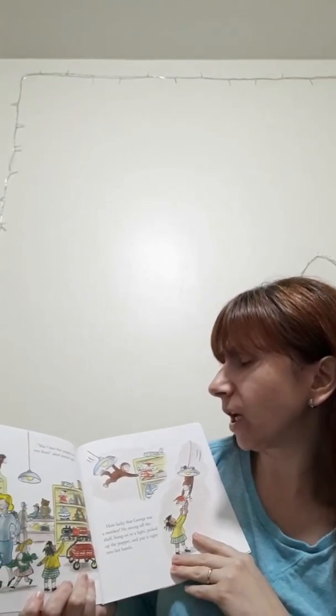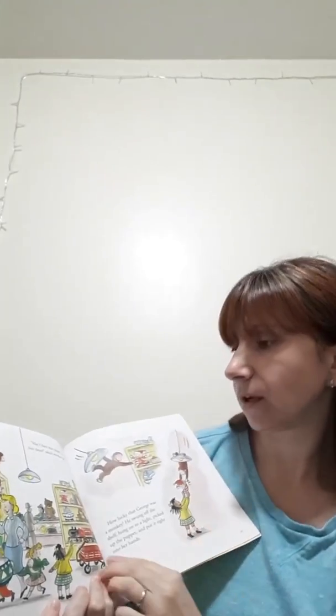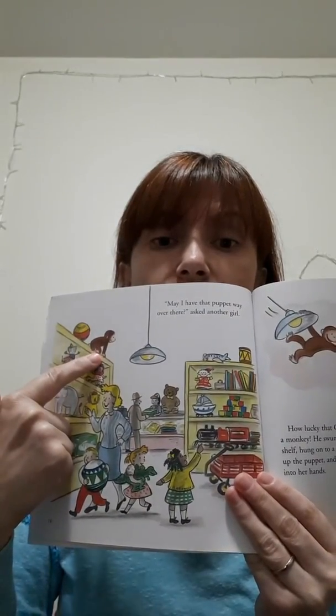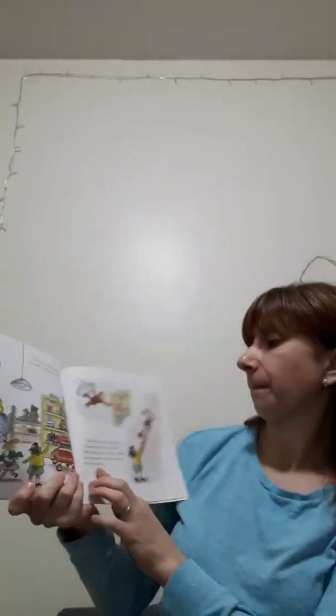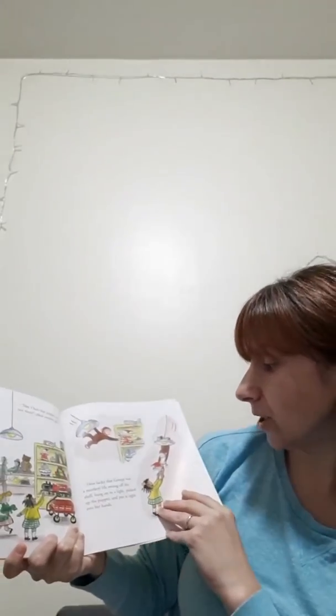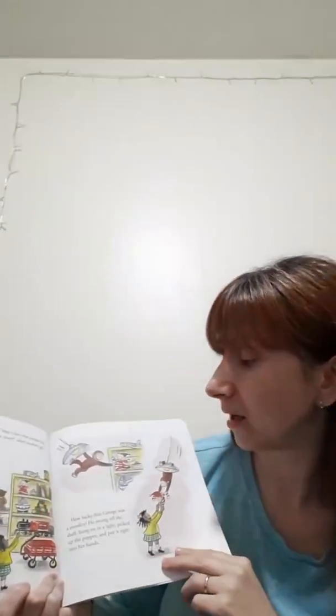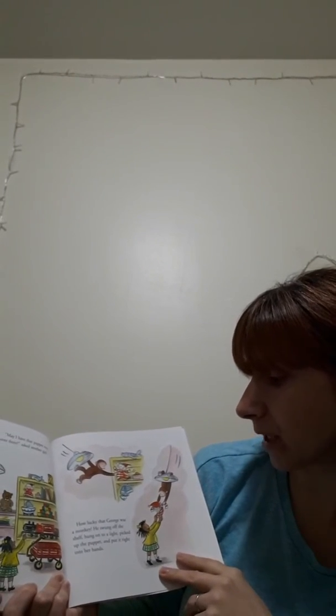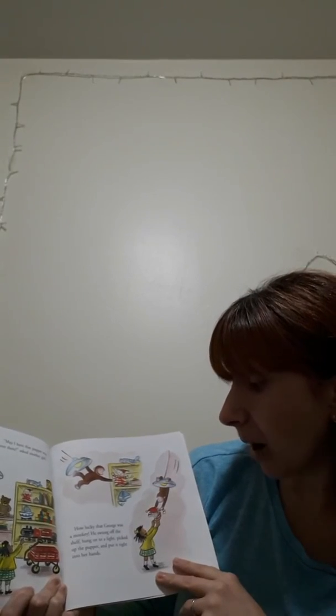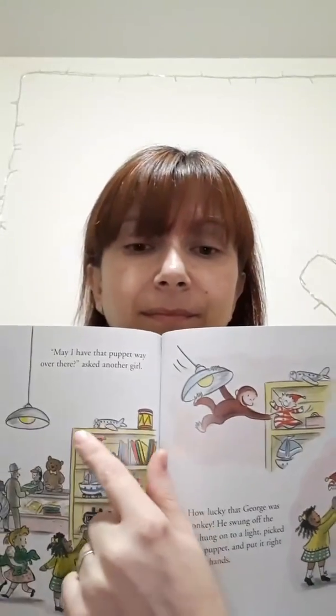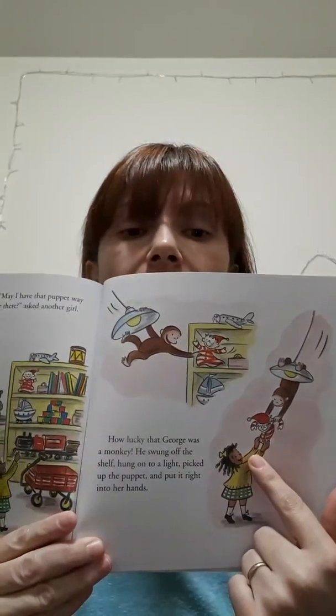May I have the puppet way over there, asked another girl. So, let's see where the puppet is. The puppet is right here. And the girl is right here. And George is here. So, let's see how he is gonna reach the puppet. How lucky that George was a monkey. Did you know that monkeys could move really fast using something that is hanging from the ceiling or a tree? So, this is what he did. He swung off the shelf, hung onto a light, picked up the puppet and put it right into her hands.